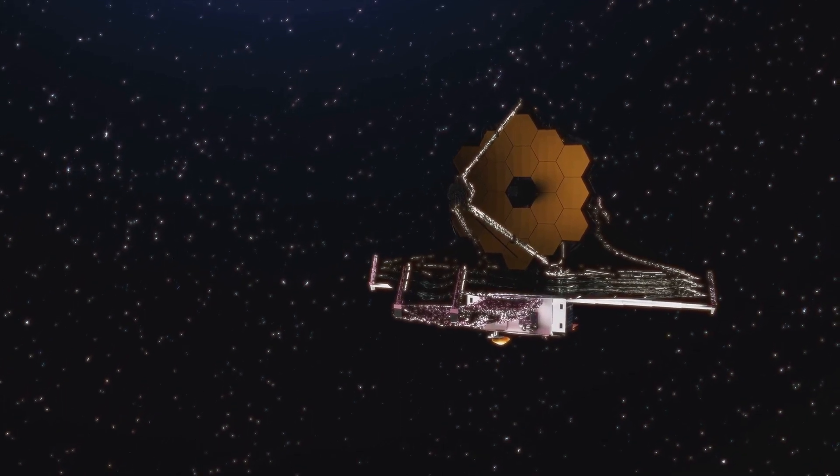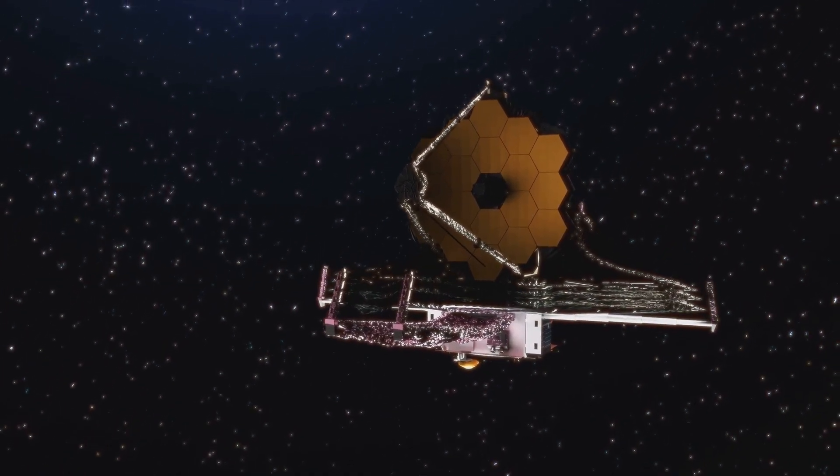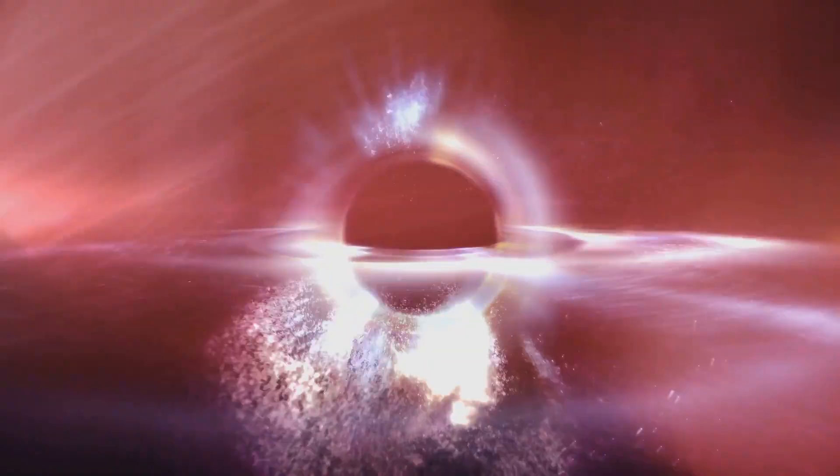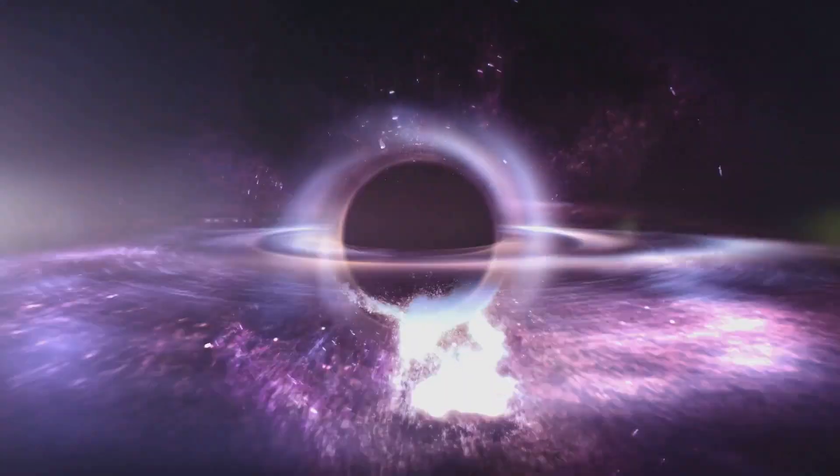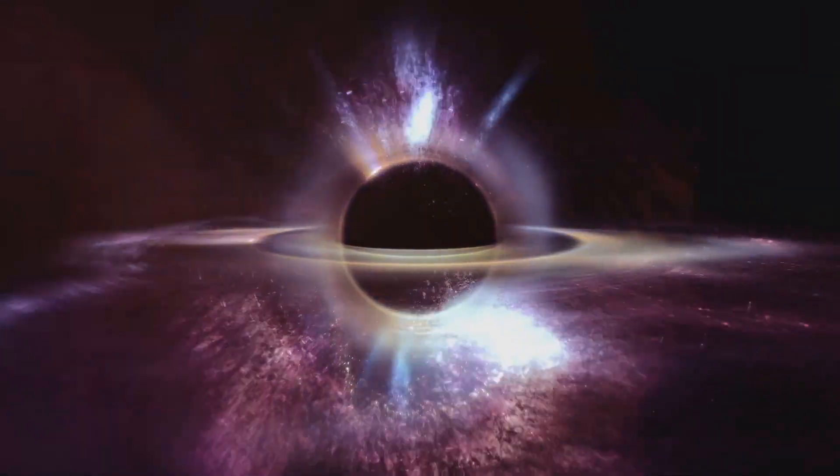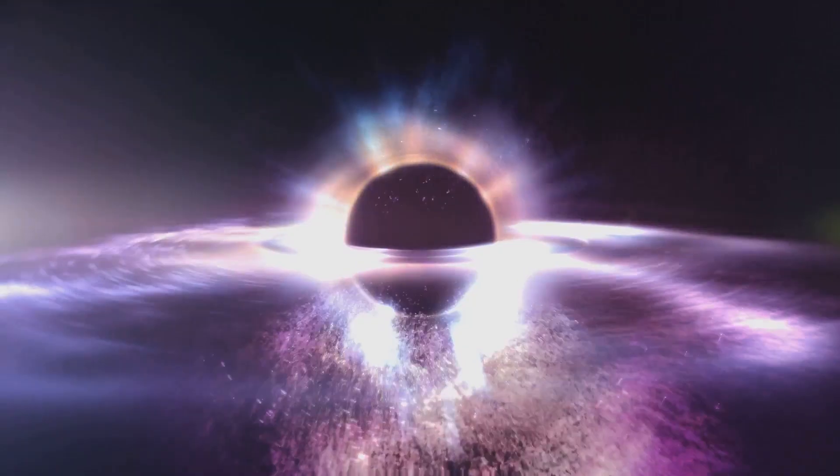The James Webb Space Telescope, the successor to the Hubble, has recently detected a primordial black hole. This black hole is located an astonishing 13.2 billion light-years away, tracing back to a time when our universe was barely 3% of its current age.